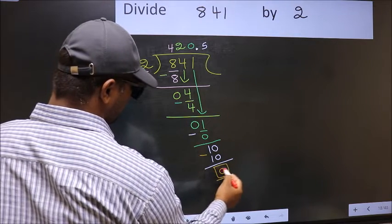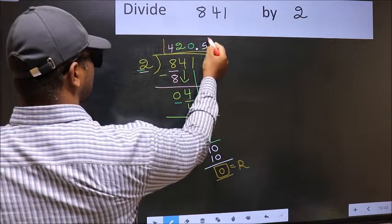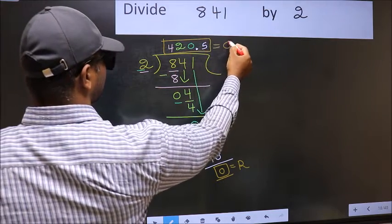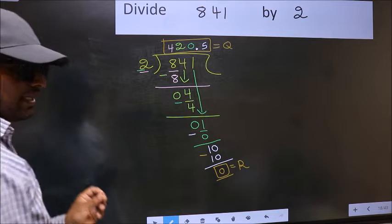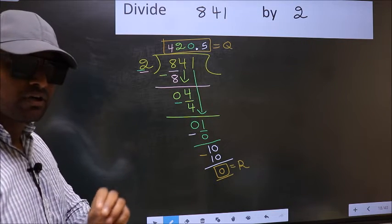So this is our remainder and this is our quotient. Did you understand where the mistake happens? You should not do that mistake.